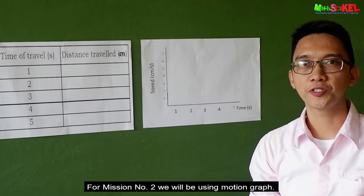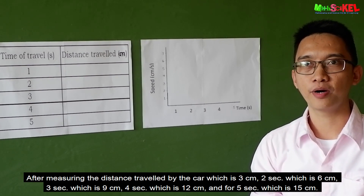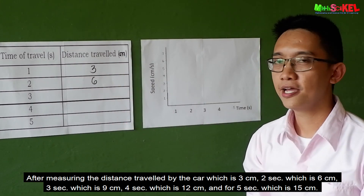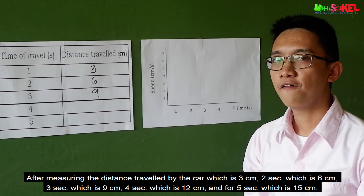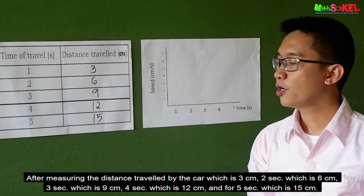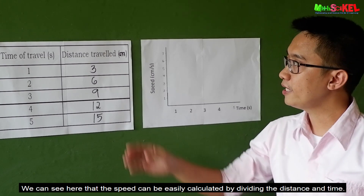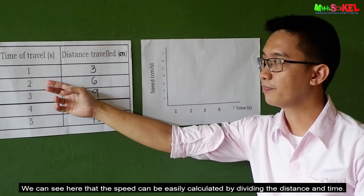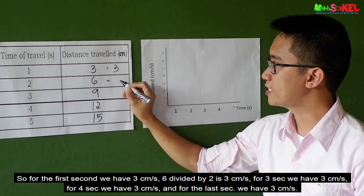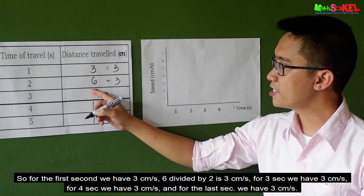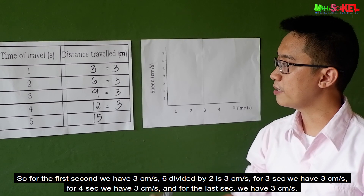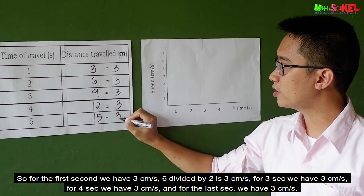For mission number two, we will be using a motion graph. After measuring the distance traveled by the car — three centimeters after one second, six centimeters after two seconds, nine centimeters after three seconds, twelve centimeters after four seconds, and fifteen centimeters after five seconds — we can see that speed is calculated by dividing distance by time. The result is three centimeters per second for each interval, confirming a constant speed.